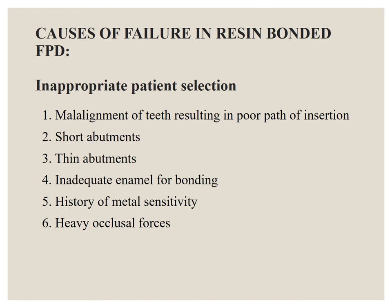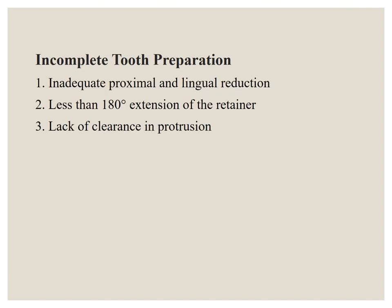The causes of failure of resin bonded FPDs: first, inappropriate patient selection — malalignment of teeth resulting in a poor path of insertion, short abutments, thin abutments, inadequate enamel for bonding, history of metal sensitivity, and heavy occlusal forces. Second, incomplete tooth preparations — inadequate proximal and lingual reduction, less than 180-degree extension of the retainer, and lack of clearance. These decrease the retention of the prosthesis and cause failure.